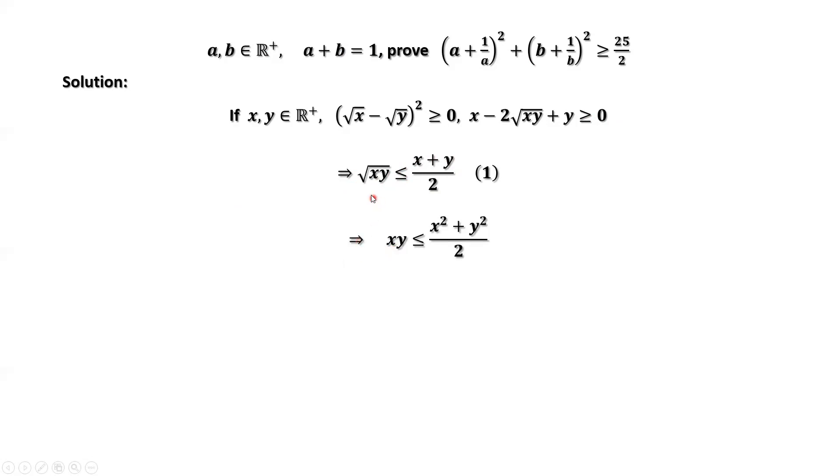If we replace x by x², y by y² in equation 1, then we have xy ≤ (x² + y²)/2. Both sides times 2, we have 2xy ≤ x² + y².